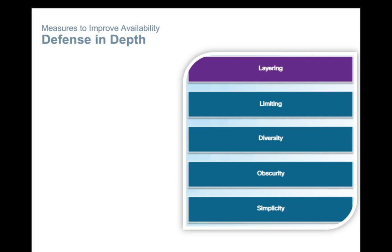For example, an organization might store its top secret documents on a server in a building surrounded by an electronic fence. The defense in depth components include: layering, limiting, diversity, obscurity, and simplicity.